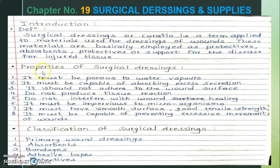The properties of surgical dressings include: it must be porous and water-vapor permeable; it must be capable of absorbing excess secretions such as body fluids; it should not adhere to the wound surface; it should not produce tissue reactions; it should not interfere with the wound healing process; it must be impervious to microorganisms; and it must have a smooth surface, good tensile strength, and be capable of preventing excessive movement of wounds.